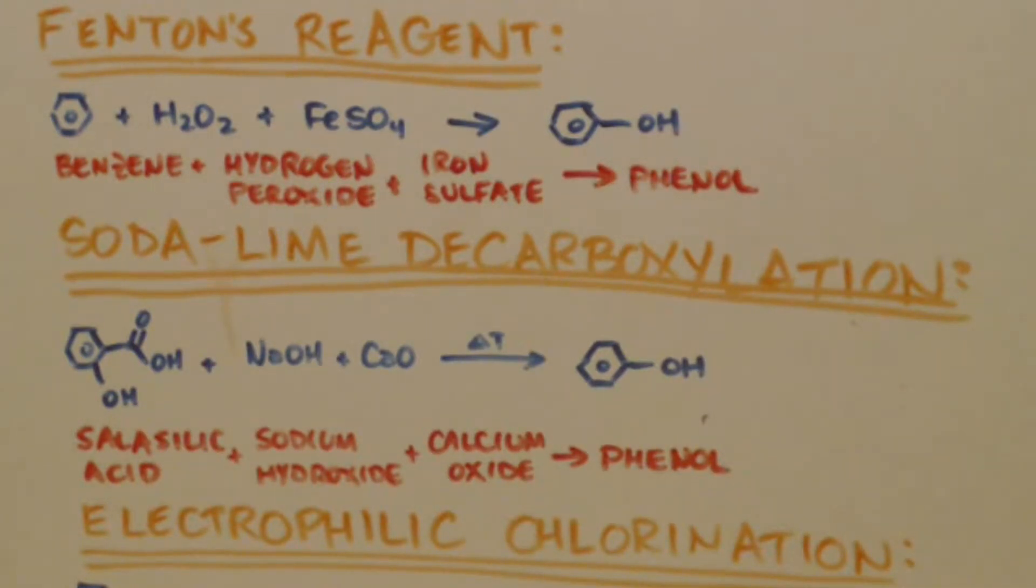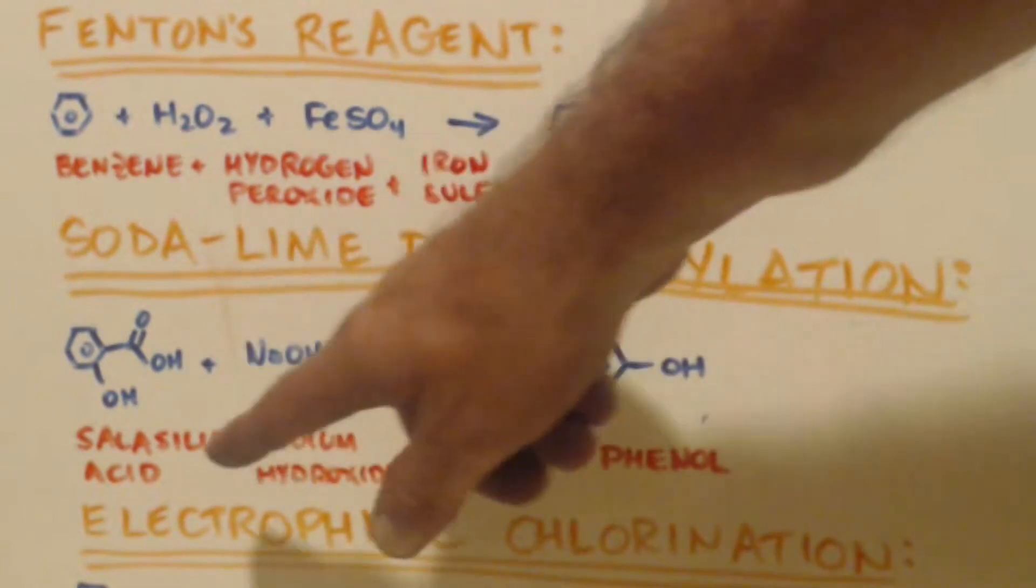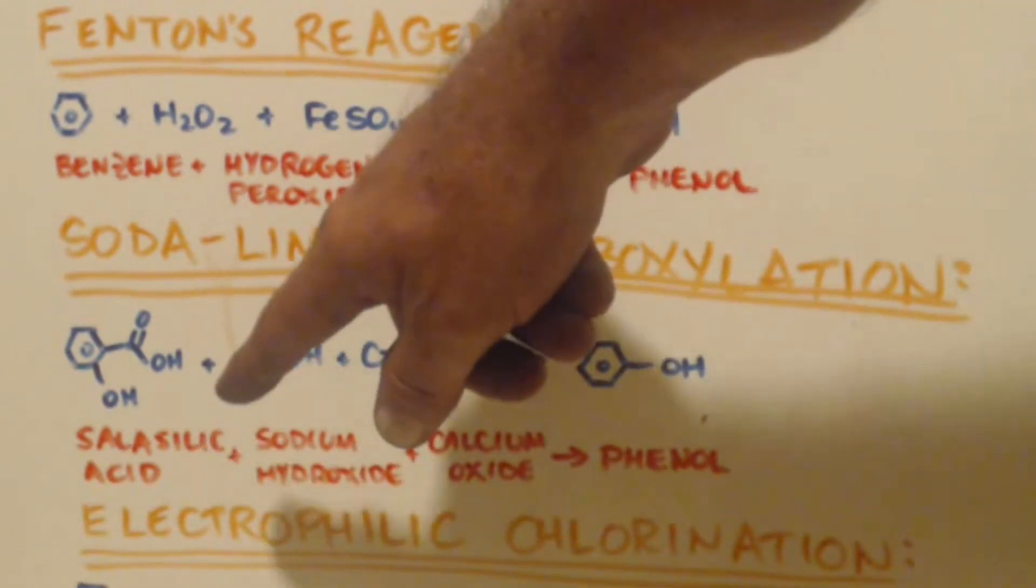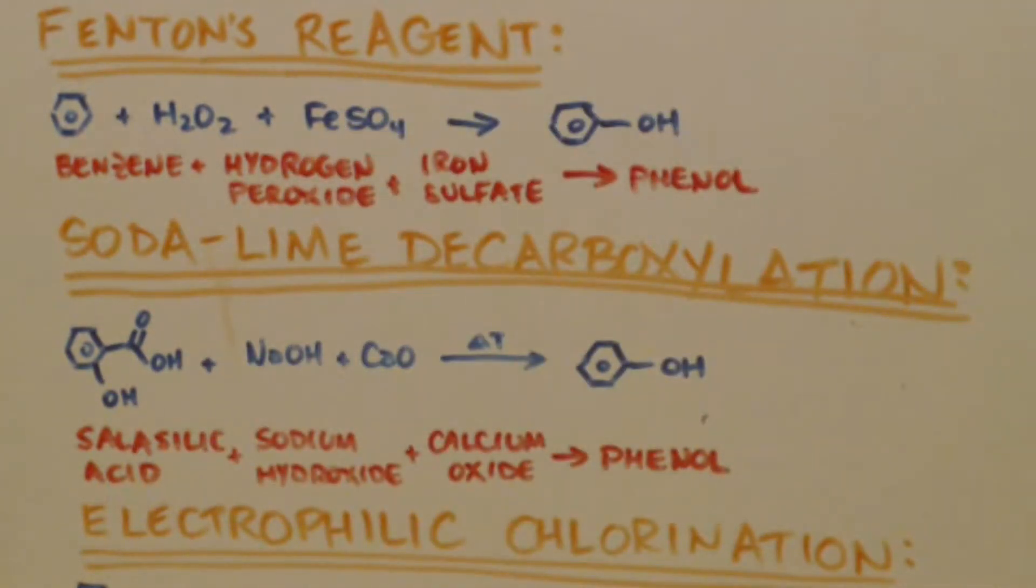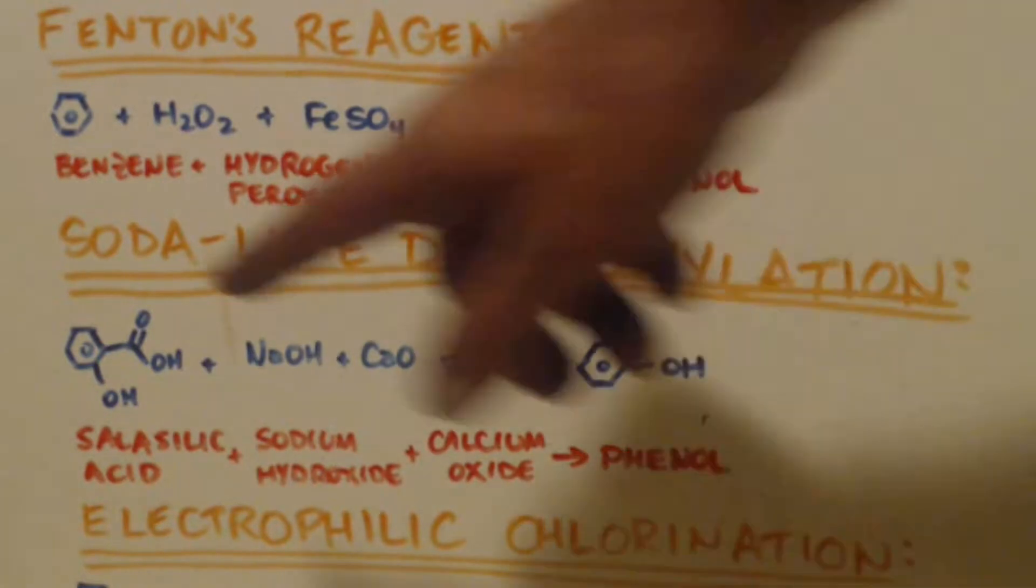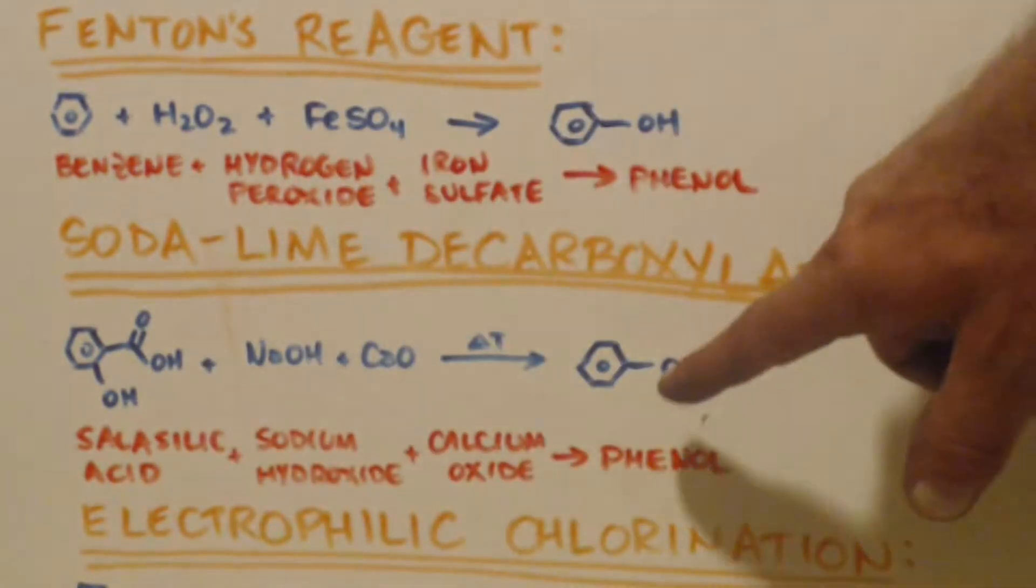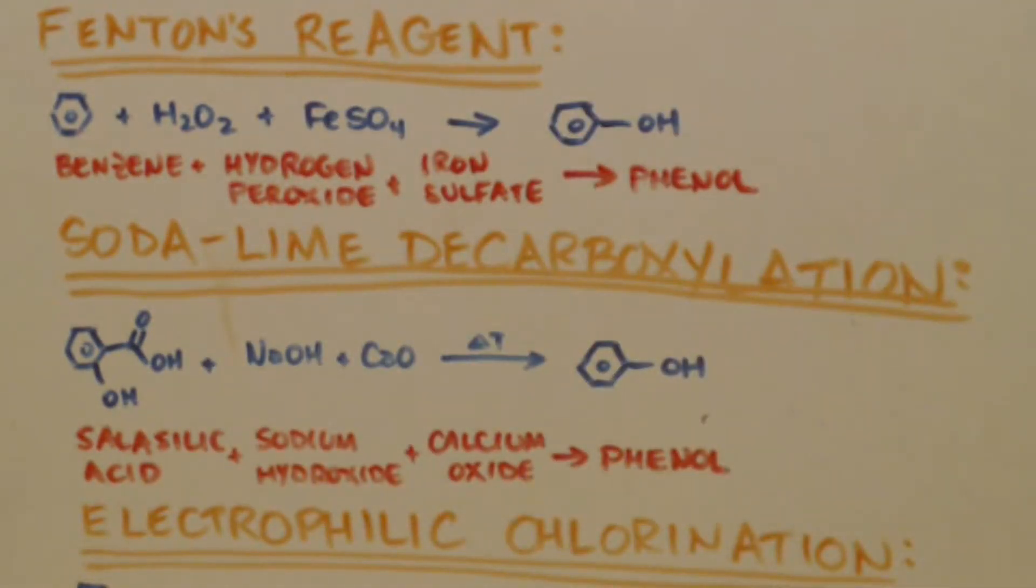Another way to make phenol is acetylene decarboxylation. You get some aspirin, which is acetyl salicylic acid, and you hydrolyze it so that the ester goes away and you end up with salicylic acid. So you end up with salicylic acid. Again, you do a soda-lime decarboxylation, just like I mentioned before. You get rid of the carboxyl group and what are you left with? Phenol. It's that simple.